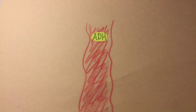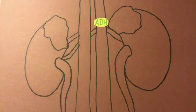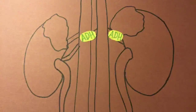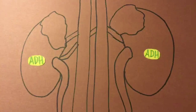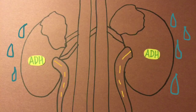ADH then travels through the blood to the kidneys, making them reabsorb more water during the filtration process. This means less water is lost in the urine, so water levels in the blood increase.